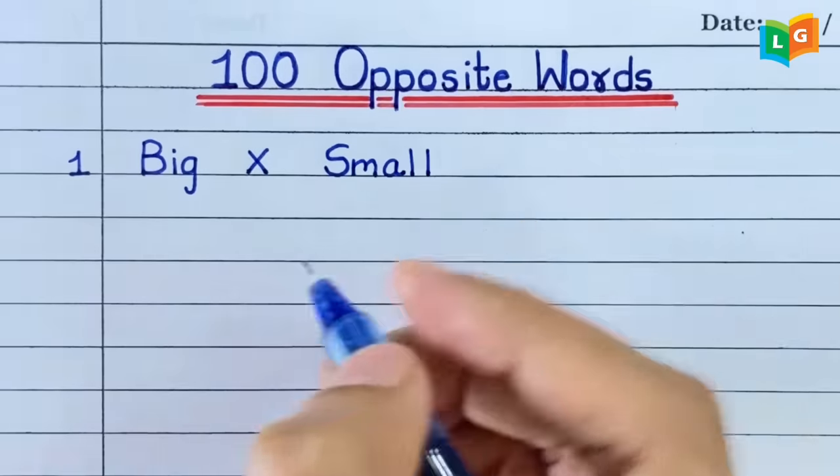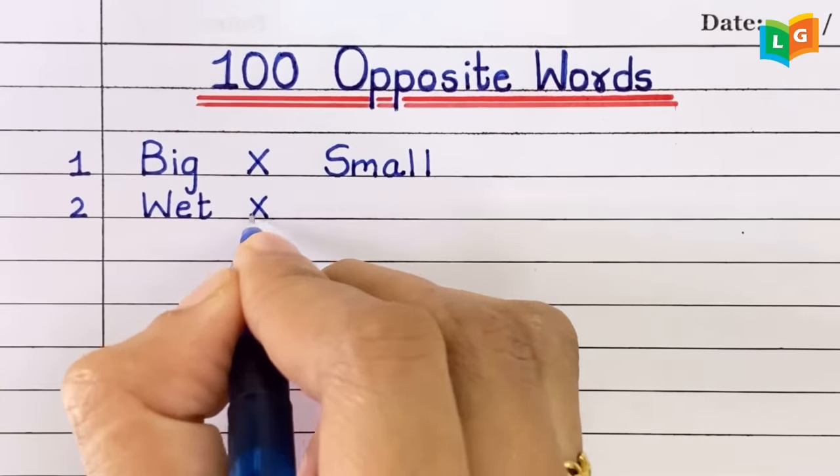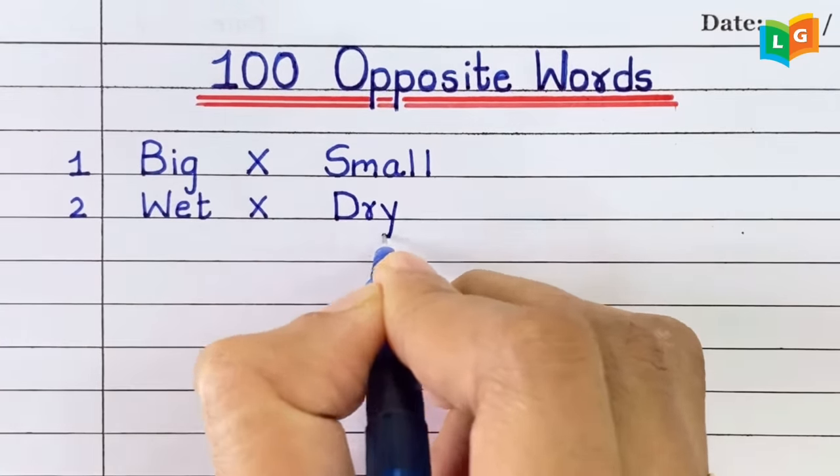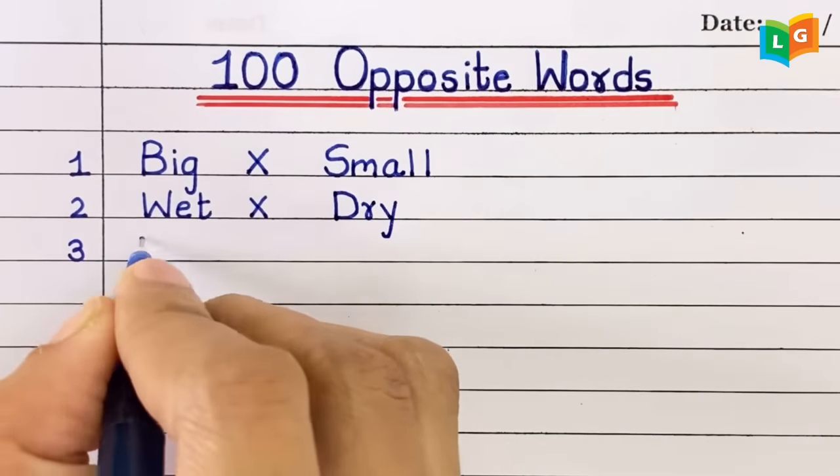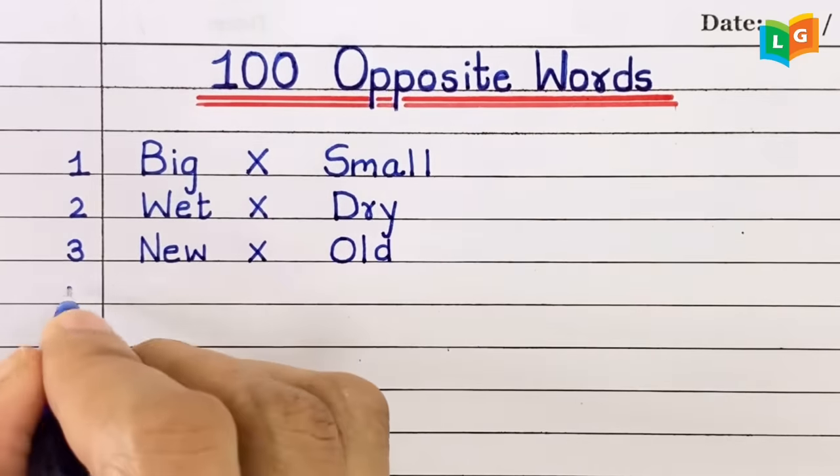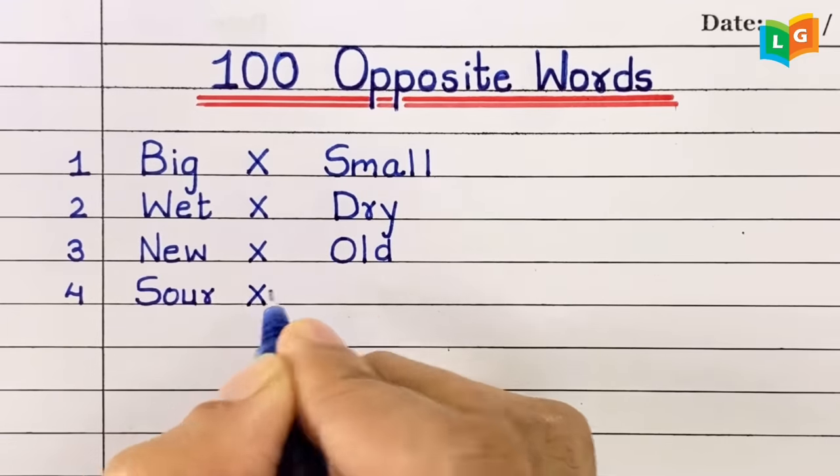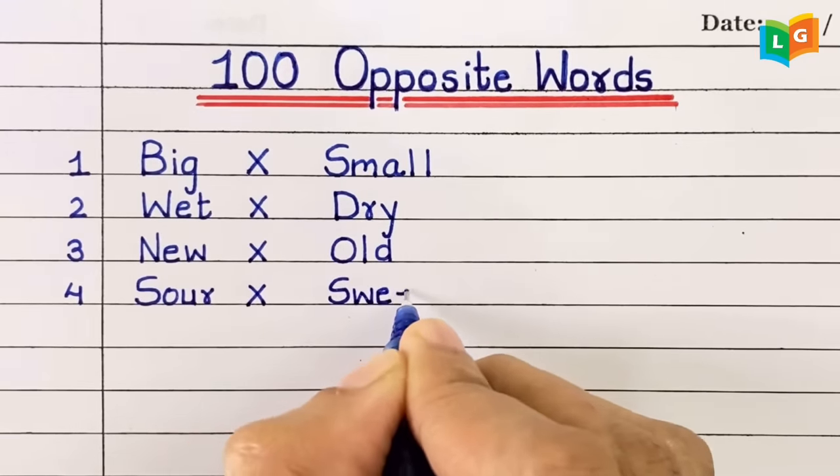So the first one is big, small. Second, wet, dry. Third, new, old. Fourth, sore, sweet.